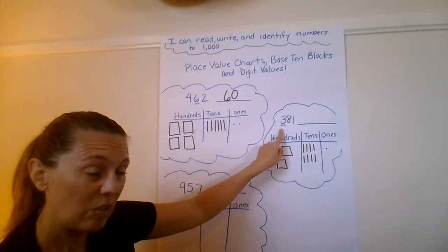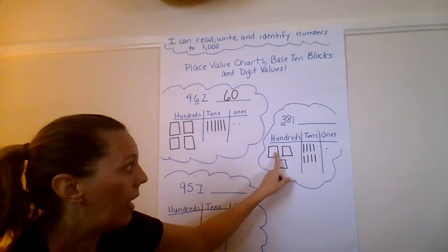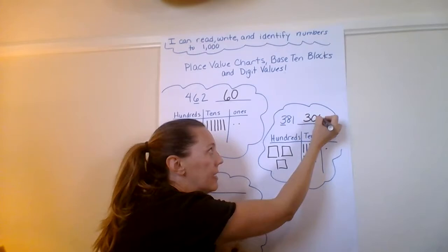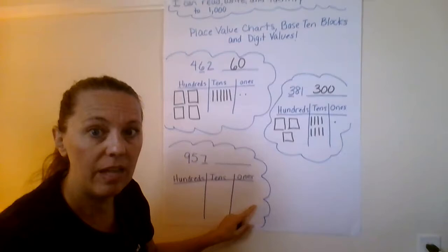The digit in this number that's underlined is the hundreds place. What value, how much is this hundreds place worth? It's worth 100, 200, 300. That value of that digit is 300.